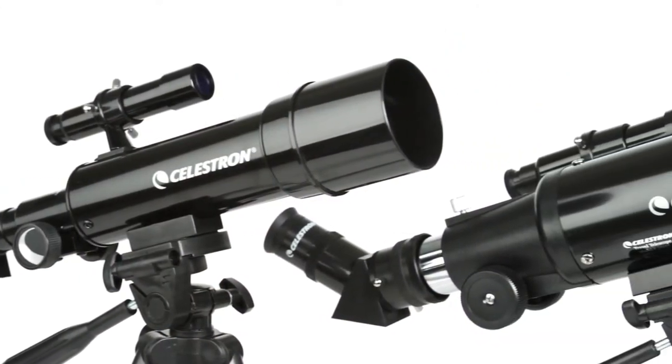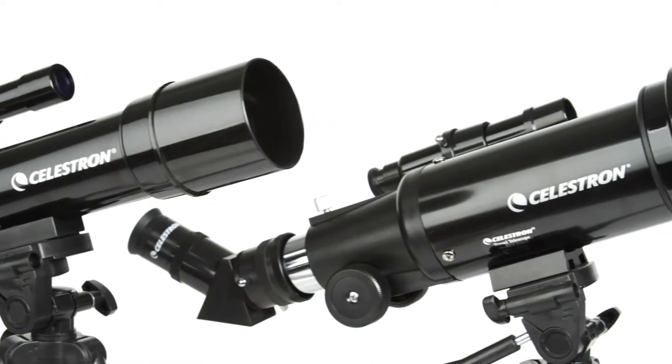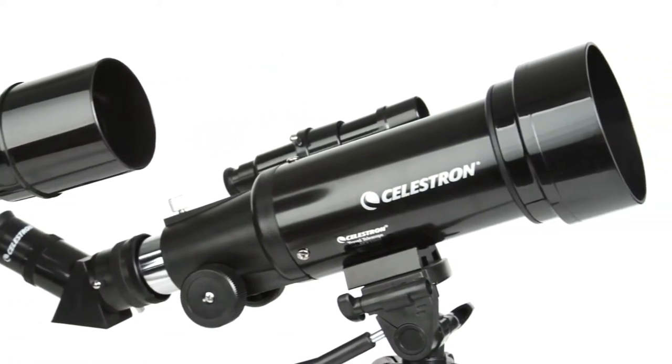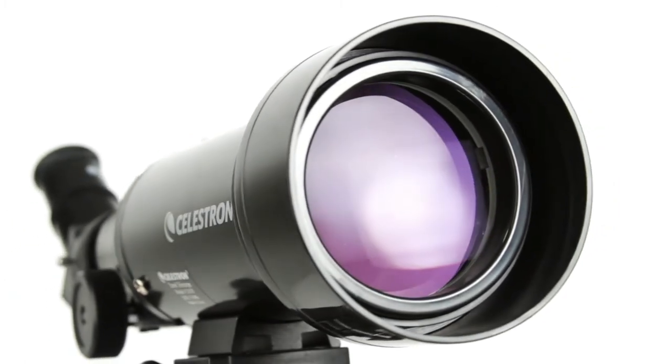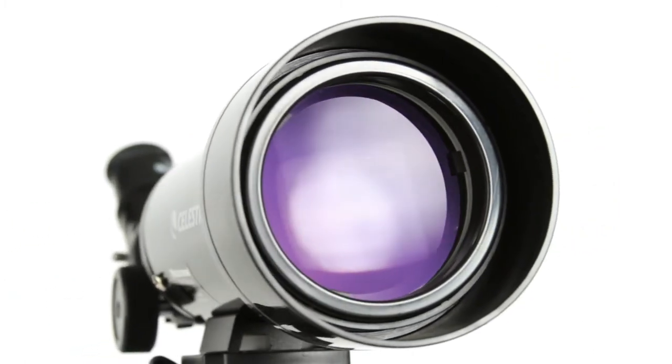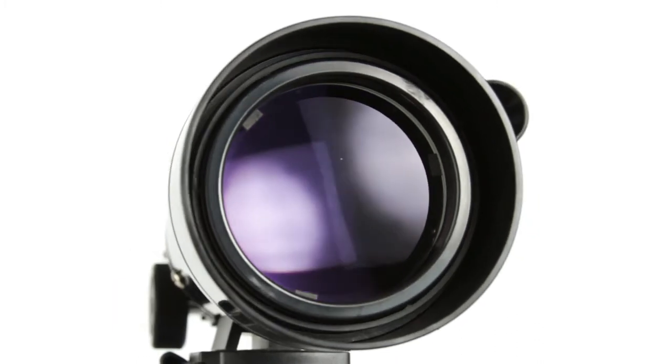TravelScope is a refractor-style telescope with objective lenses ranging from 50 to 70 millimeters. That's enough light-gathering ability to view the rings of Saturn, craters on the moon, and many more of the brightest celestial objects.